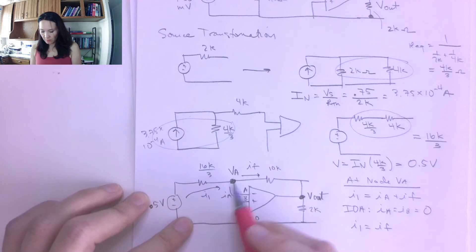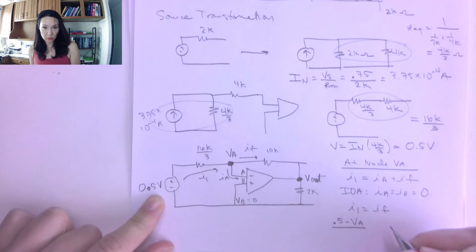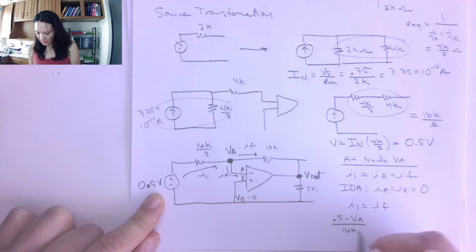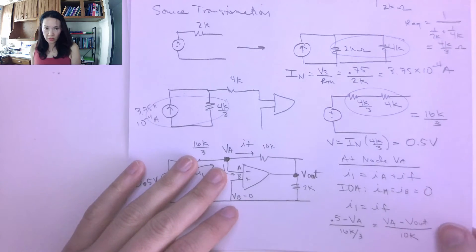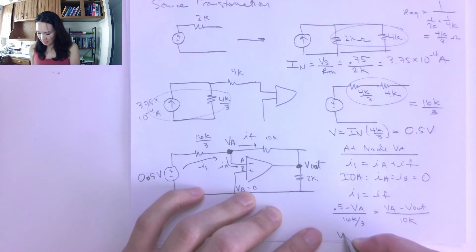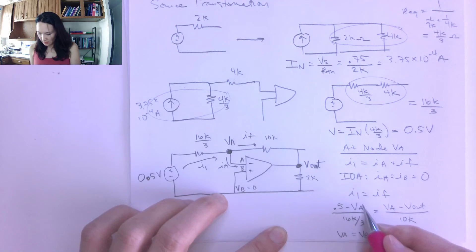And then I can replace these with my nodal analysis here. So this voltage difference is going to be 0.5 minus VA over the resistor between, which is 16k over 3. I'm going to replace this IF with VA minus Vout over the resistor between, which is 10k. And then the next approximation, ideal op amp approximation I get to make, is that VA is equal to VB. And in this case, since VB is equal to 0, this implies that VA is also equal to 0. So that means this is 0, and this is 0.